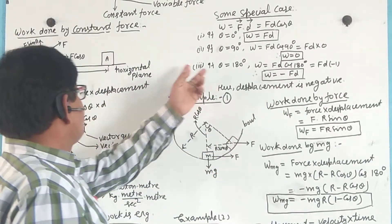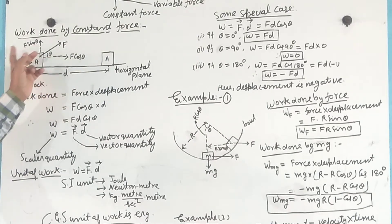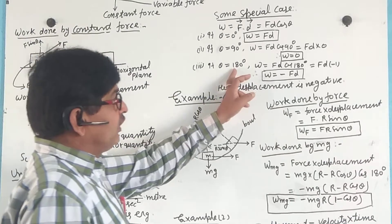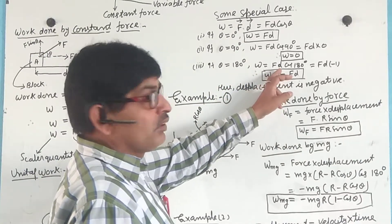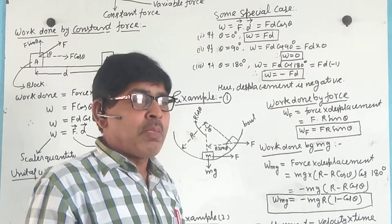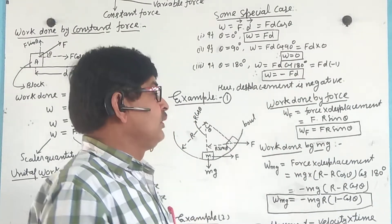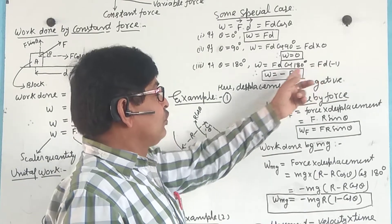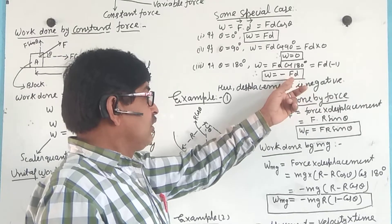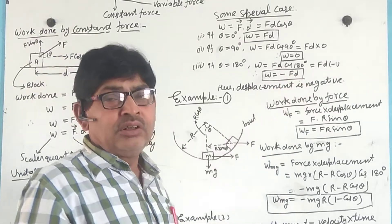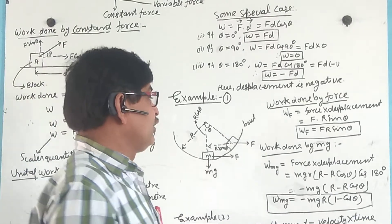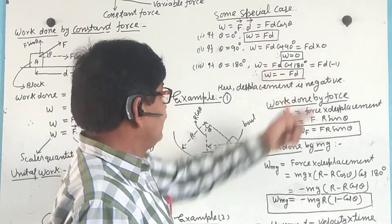Now, in the case where the displacement and applied force have a theta angle of 180°, the work done is equal to F·D·cos 180°. As we know, cos 180° = −1, so W = −F·D. In this case, the displacement D is in the negative direction — the displacement is negative.